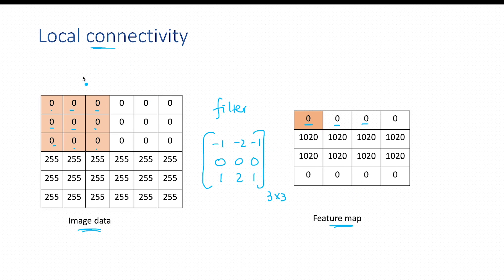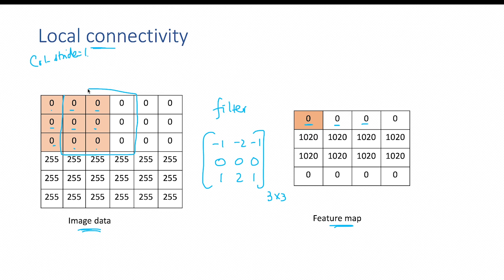So what exactly is local connectivity? Images have a spatial structure — the nearby pixels are more closely related than the distant pixels. Local connectivity allows CNNs to take advantage of this by focusing on local patterns in the data. By considering a column stride of one, you basically perform the next convolution operation on the next image patch using the same filter so as to extract the subsequent feature value. This filter is specialized in identifying edges within a particular image.